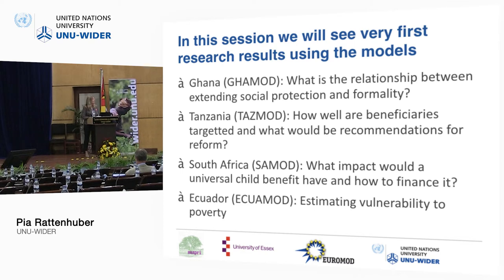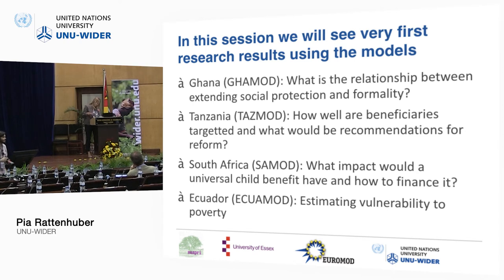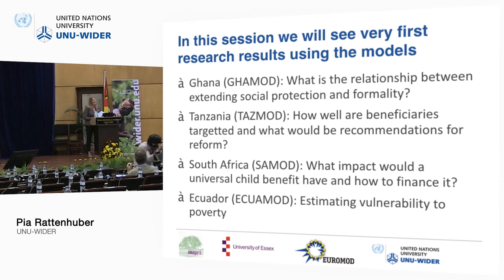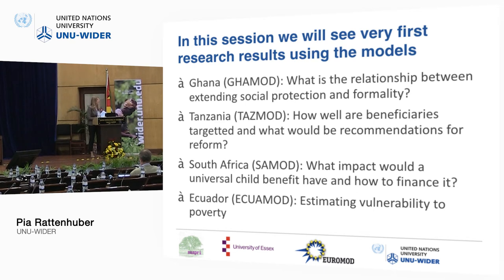What we will see today is four applications of such models. The first one uses the model for Ghana — the GARMOT model — and looks at the relationship between extending social protection and formality; that's UCAS's presentation. The second paper uses TASMOT, the model for Tanzania, and looks at how well beneficiaries are targeted and what reforms could deliver a better result.